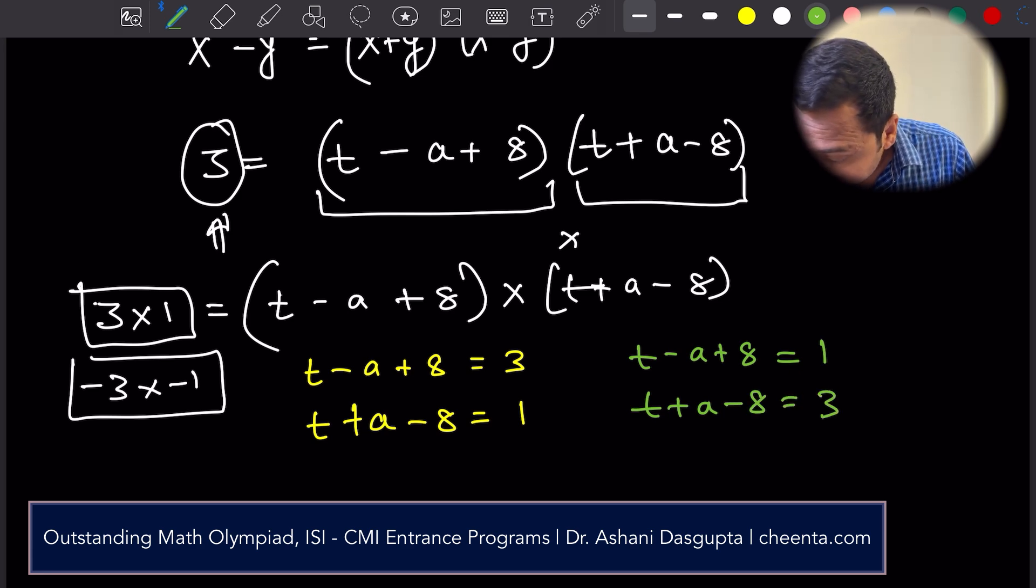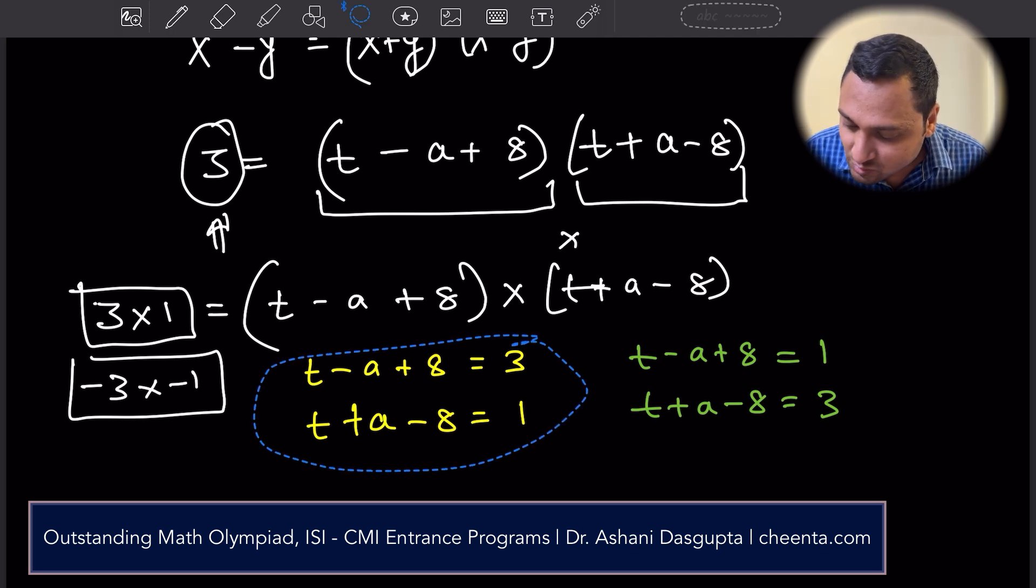3 just swaps. Then, what are the other two? Just simply the same thing. Just minus 3 and minus 1. Minus 1 and minus 3.